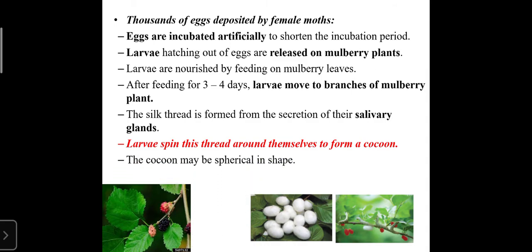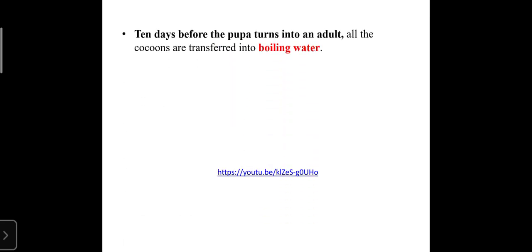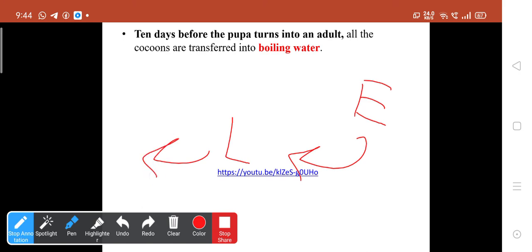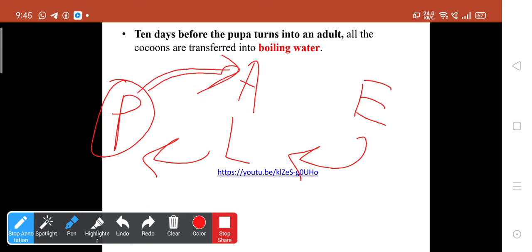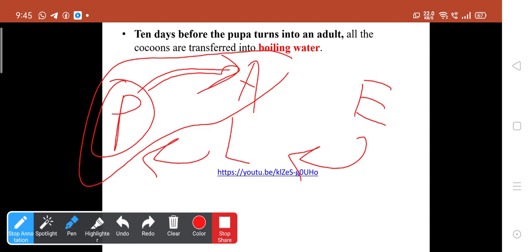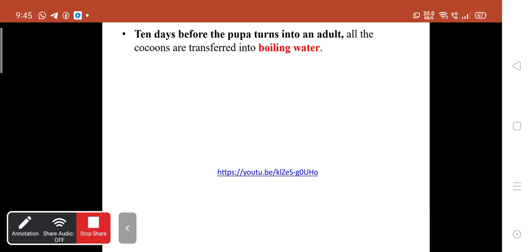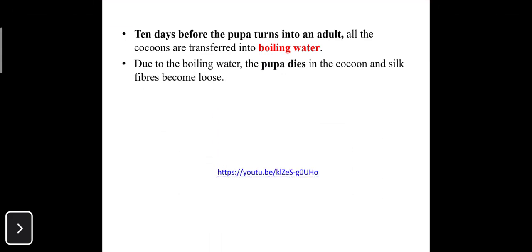The larva spins the silk thread around itself to form a cocoon, which can be spherical in shape. Remember the life cycle order: eggs → larva → pupa → adult. Ten days before the pupa turns into an adult, all the cocoons are transferred into boiling water.